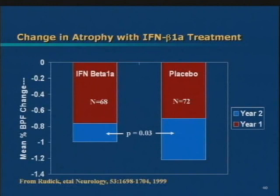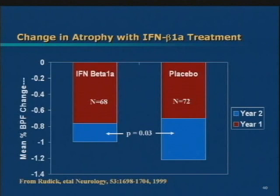A similar thing was noticed with interferons, which have a very different mechanism of action. This is interferon 1A (Avonex) over a two-year period. In the first year, whether you're on the drug or on placebo, the atrophy gets worse with no difference. In the second year, if you're on the drug the atrophy slows down; if you're on placebo it continues, and there's a difference. It may be that these protective effects take some time to begin working. Both of these drugs, with two completely different mechanisms of action, seem to be doing something that we would like as a marker of neuroprotection — preventing atrophy.